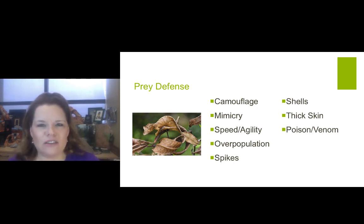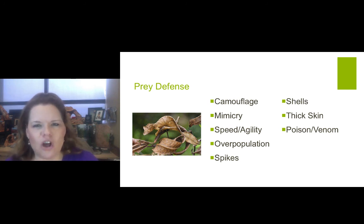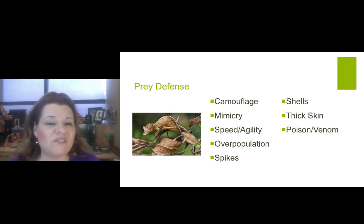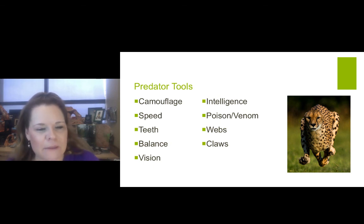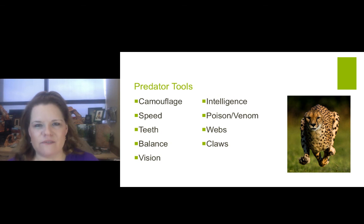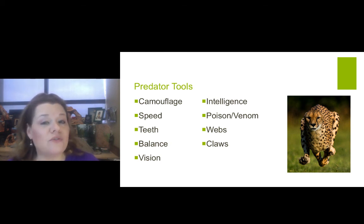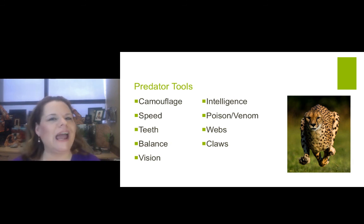Prey defenses: camouflage — they mimic other things, like a leaf. They may have strong speed or be very agile to make sharp turns. They can have overpopulation, spikes, shells, thick skin, poison, or venom. All of these are prey defenses to try to stay alive. Predator tools: they also camouflage and have speed. They have sharp teeth, balance, and excellent vision. Cats are a great example — at night, cats are all about night vision and have remarkable eyes that allow them to see in the dark very well. Intelligence, poisons or venoms — for example, a rattlesnake. Webs and claws give them tools to grasp or obtain their prey.